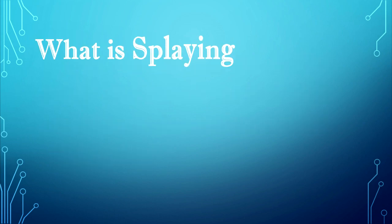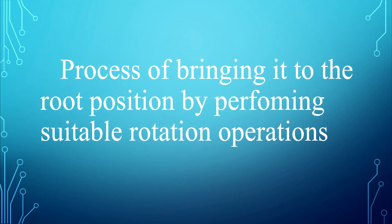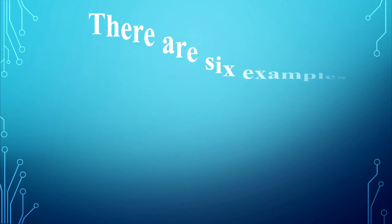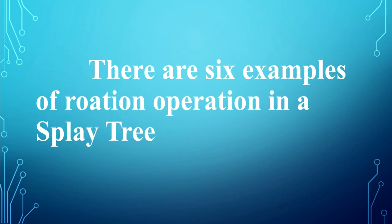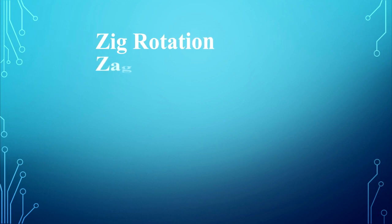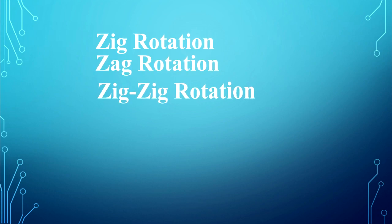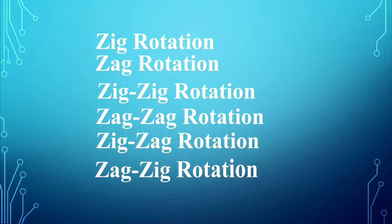What is splaying? Splaying is the process of bringing an element to the root position by performing suitable rotation operations. There are six types of rotation operations in a splay tree: zig rotation, zag rotation, zig-zig rotation, zag-zag rotation, zig-zag rotation, and zag-zig rotation.